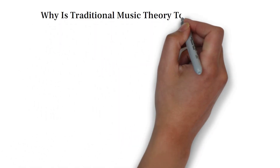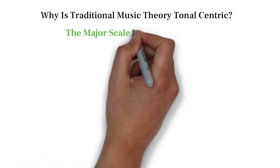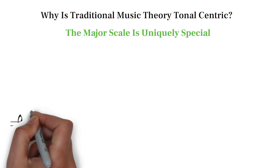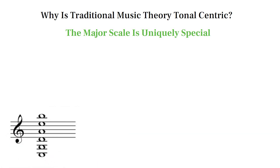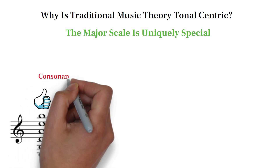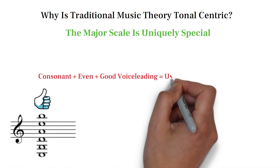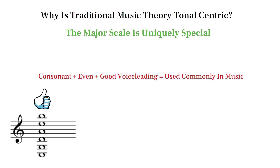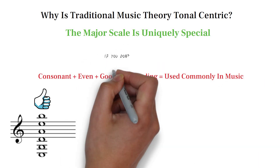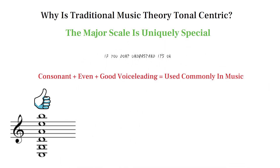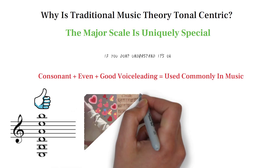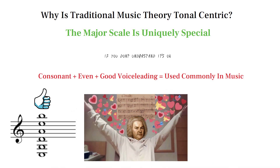So why does traditional music theory rely so heavily on the major chord and scale when there are so many more possibilities that it fails to describe well? Admittedly, the major scale is very special. It's built by stacking fifths, which is the most consonant interval, which leads to it being the most consonant and even scale, making it ideal for voice leading and practical use in music. Using traditional theory to describe music based strictly off the major scale and its modes is totally useful and fine.